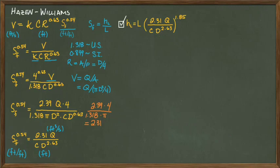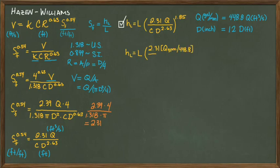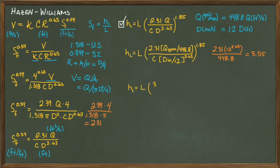To further make this equation easier to use, we need the flow rate to be in gallons per minute and the diameter in inches because those are the typical units used in water systems in the United States. Substituting those conversion values into our equation and then combining these constants once again provides us with a new equation where the conversion constant changes from 2.31 to 3.55. And that allows us to use the flow rate in GPM and the diameter in inches.